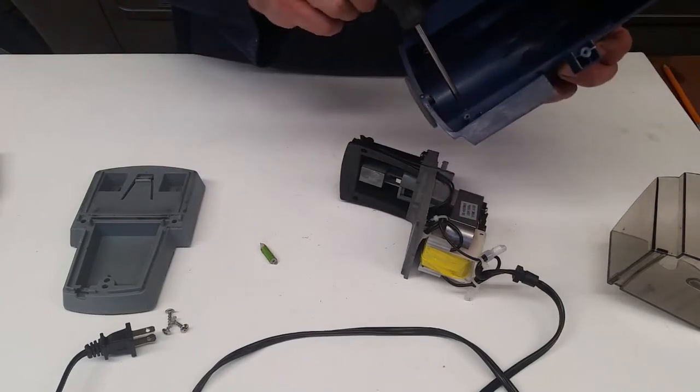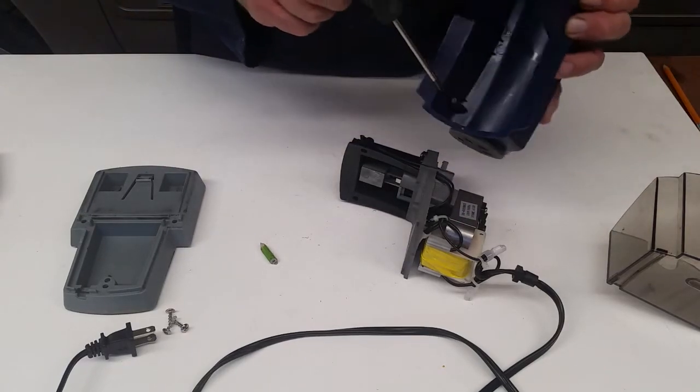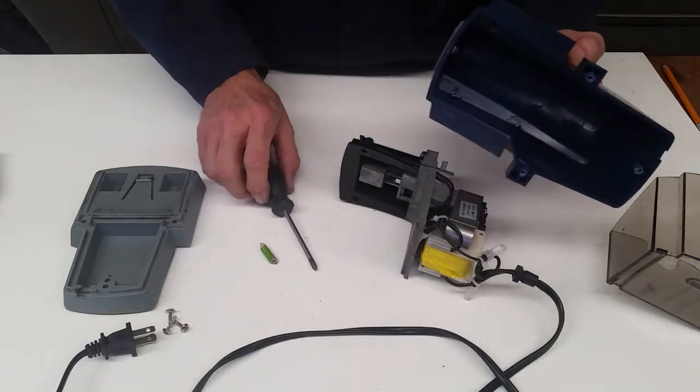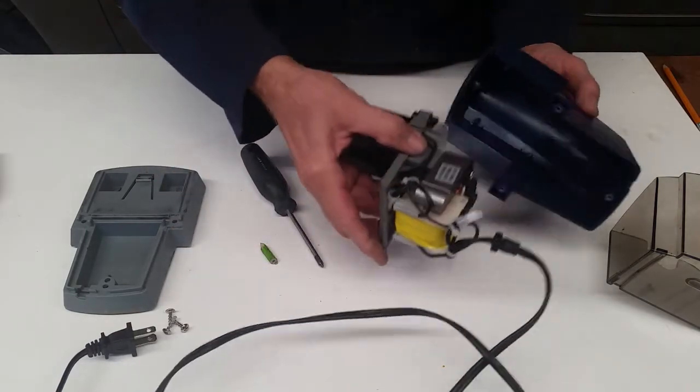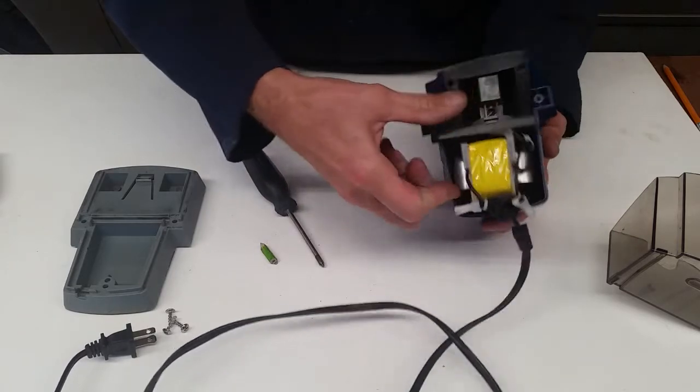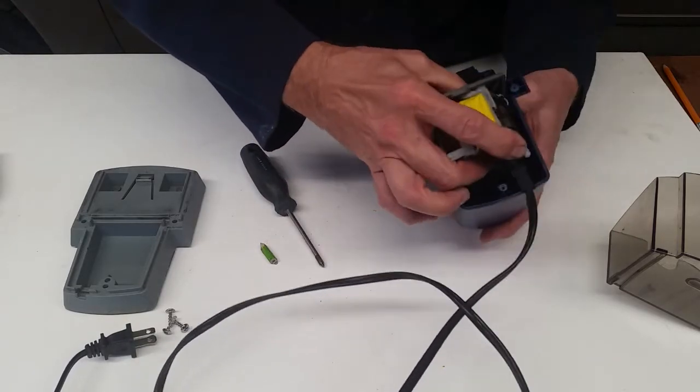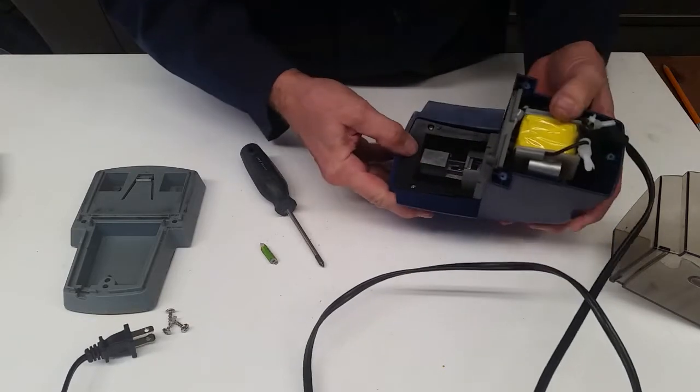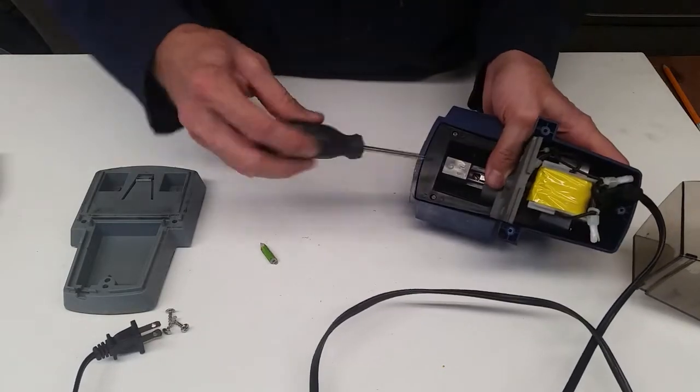When you put it back together, you'll notice that the screws go into these little plastic tubes here like this. So you don't want to over-tighten the screws. They tend to be easily stripped, so all you're trying to do is just kind of hold it in place. So we'll go ahead and see if we can get this back together quickly.